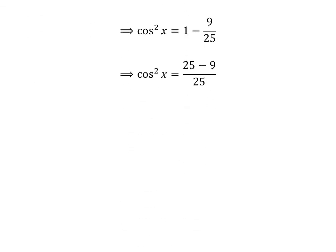Simple arithmetic operation gives us square of cosine of x is equal to 25 minus 9 upon 25. Further simplification gives us square of cosine of x is equal to 16 upon 25.